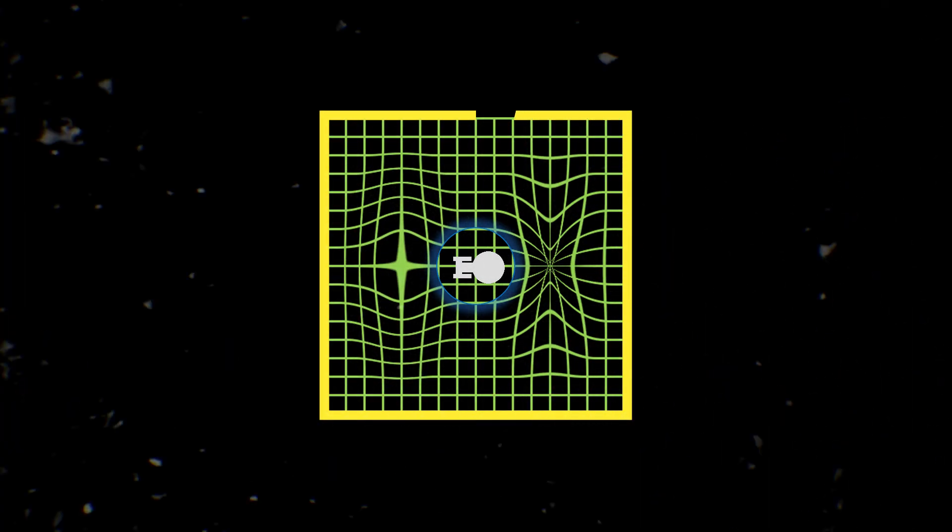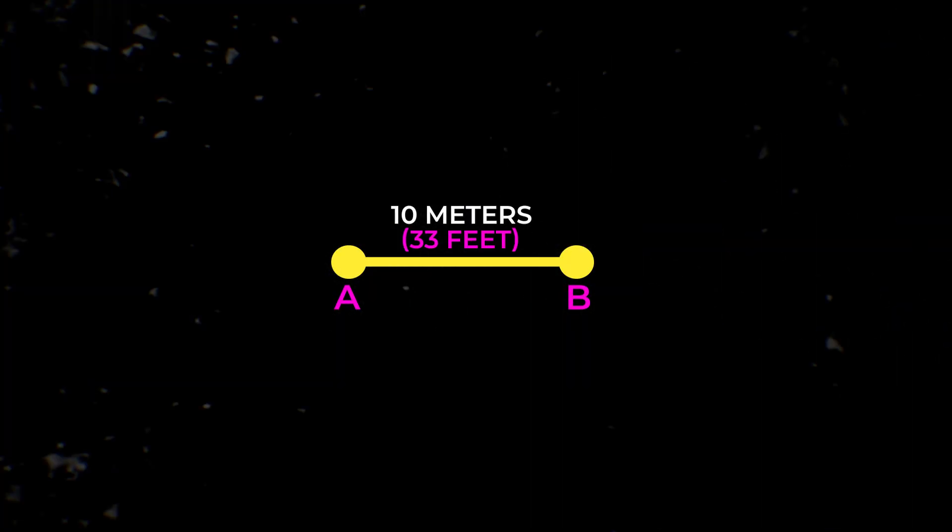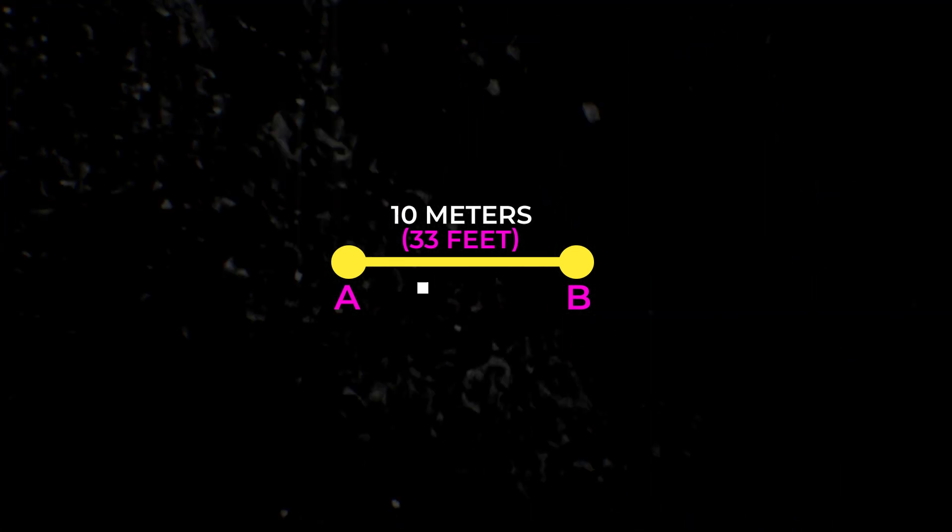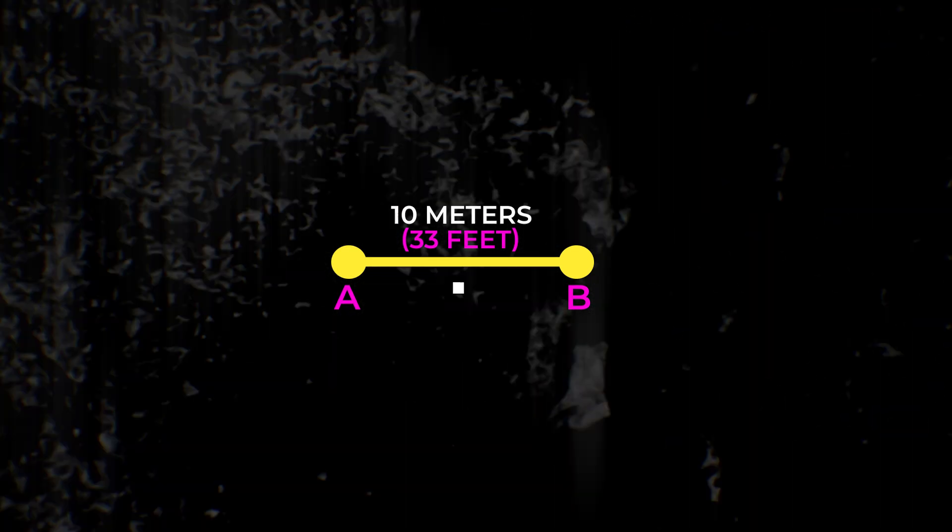So, what does that mean? Imagine the distance between two points is 10 meters. If you're standing at point A and can travel 1 meter per second, it would take 10 seconds to get to point B.